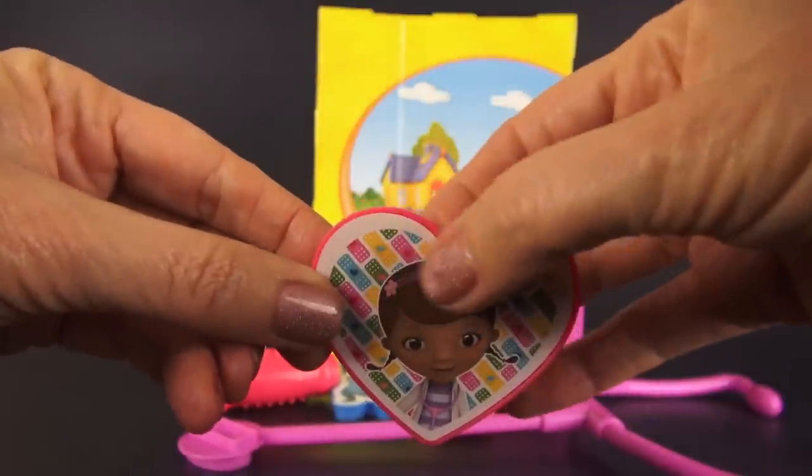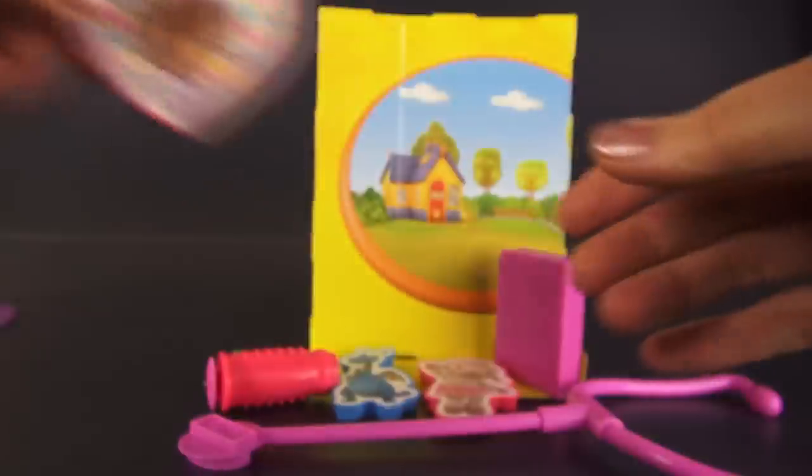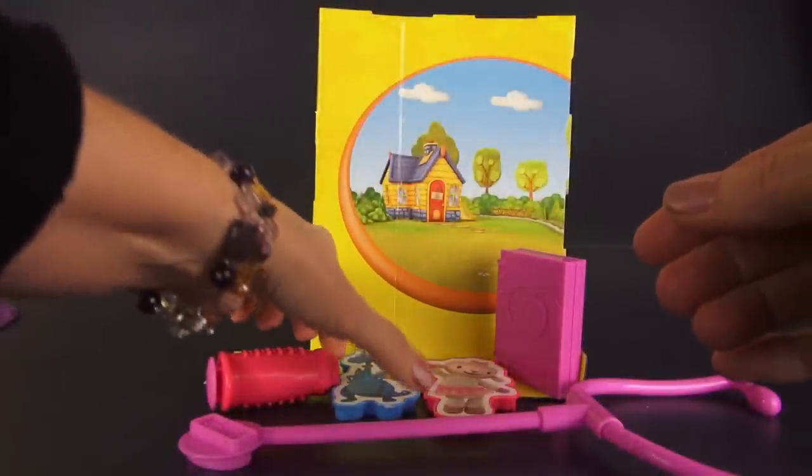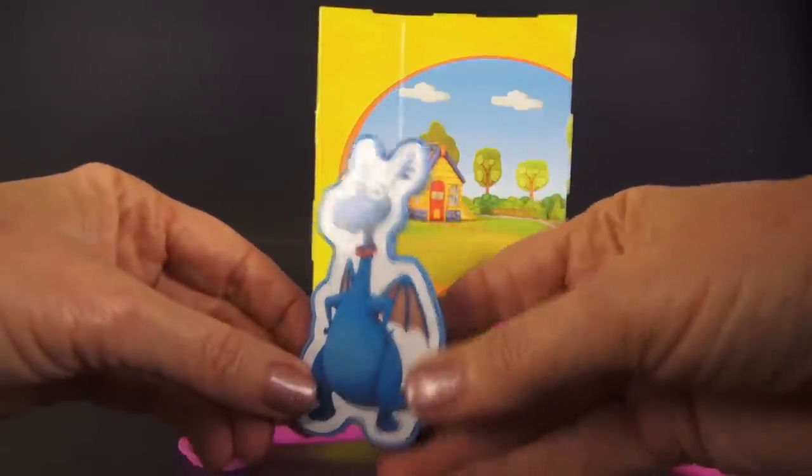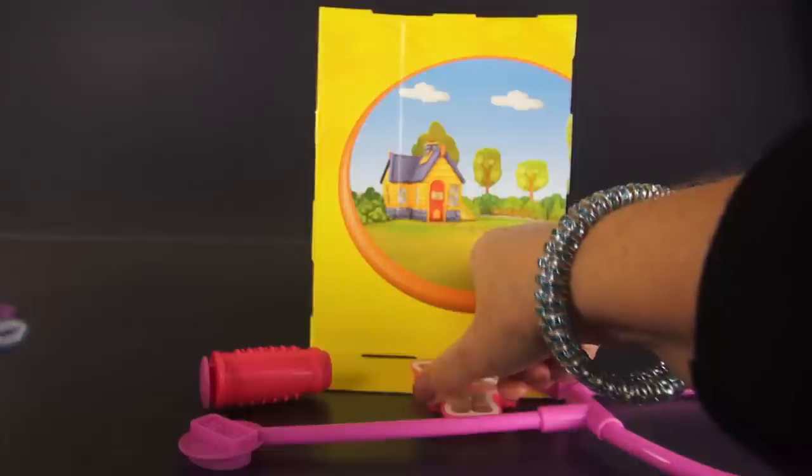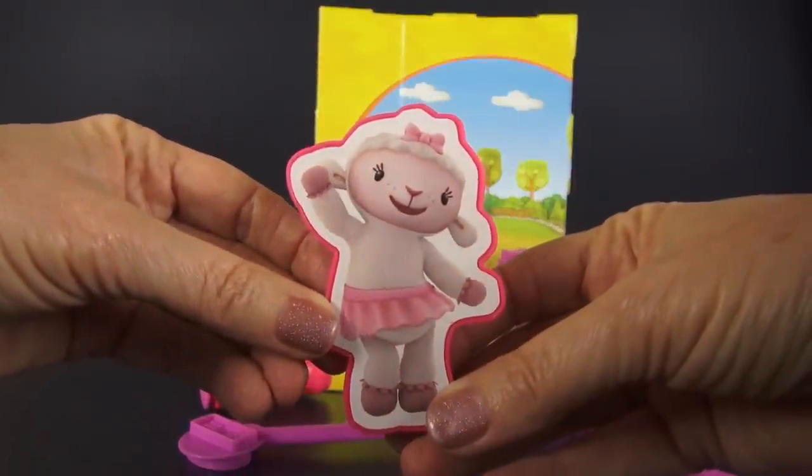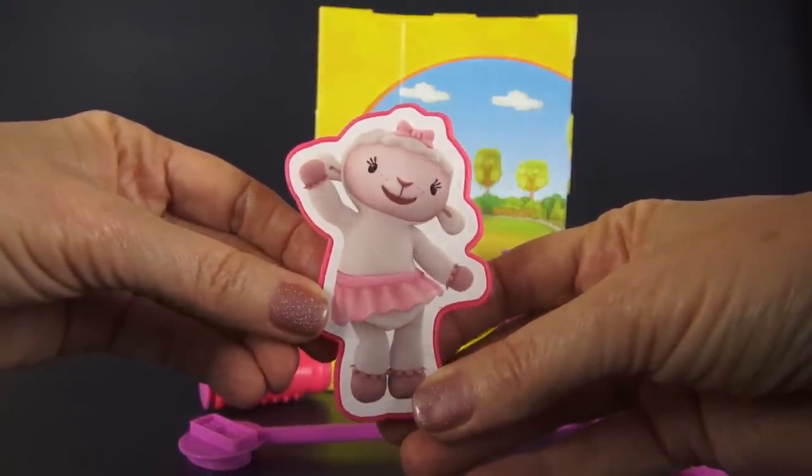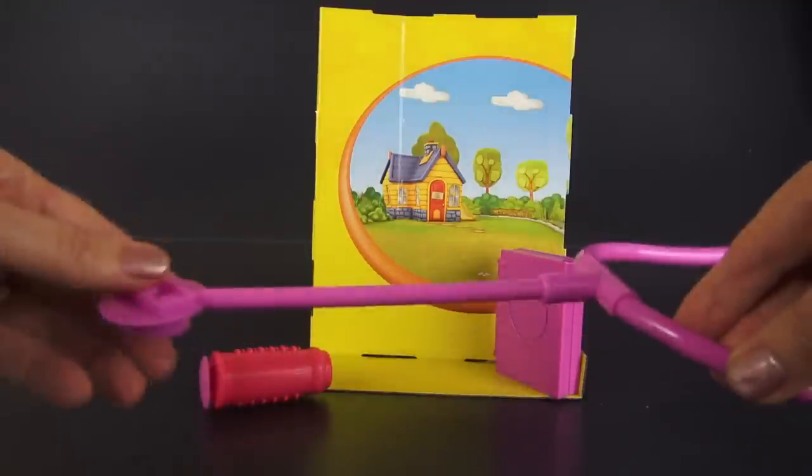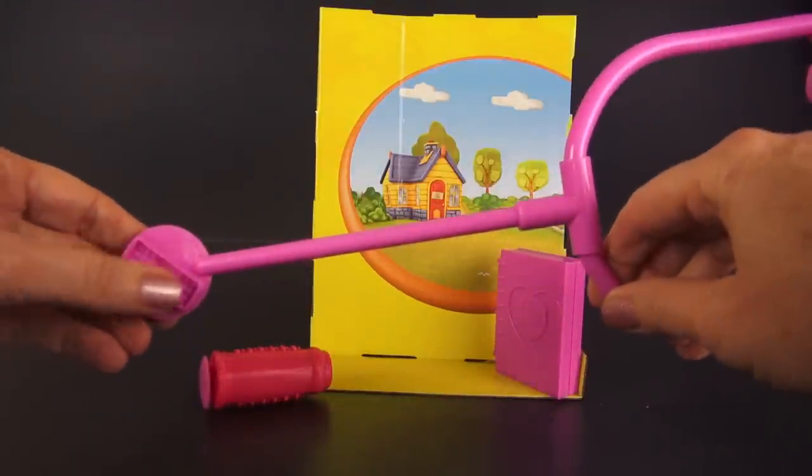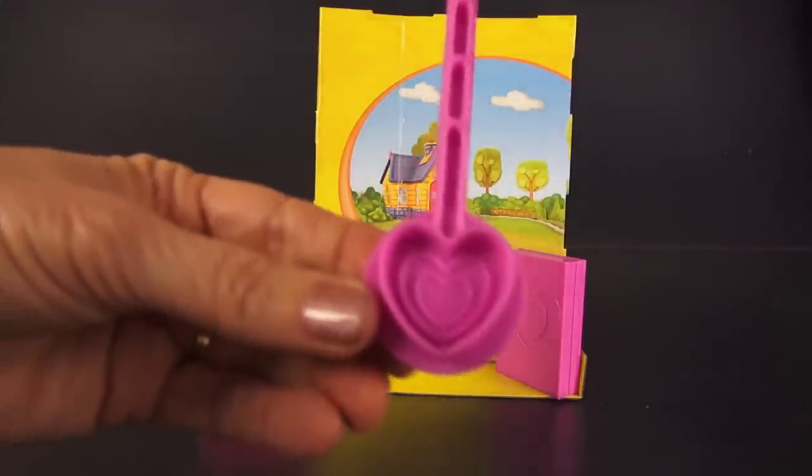She always wears that headband that sparkles and looks very nice on her. And then we have her friend, Stuffy, the dragon. Hi, Stuffy. And then we have Lambie, who's also her toy and her friend, and talks to her when Doc has her magic stethoscope on. Speaking of stethoscope, the set comes with the stethoscope, which has two molds on it, the Band-Aid mold here, and then we have a heart mold there.